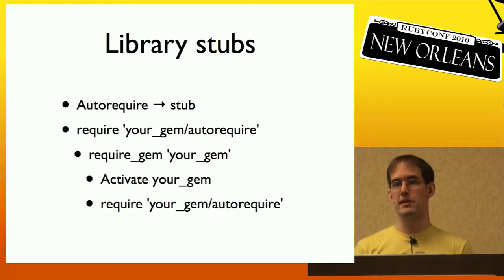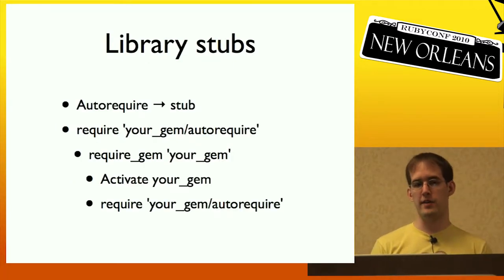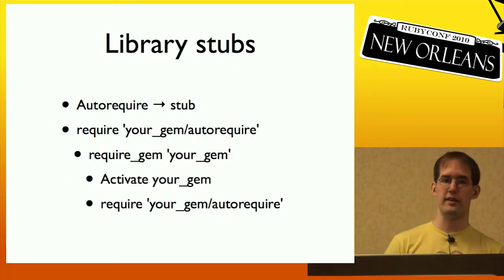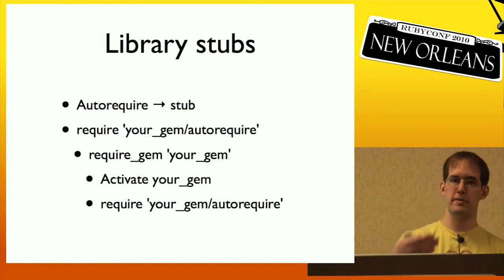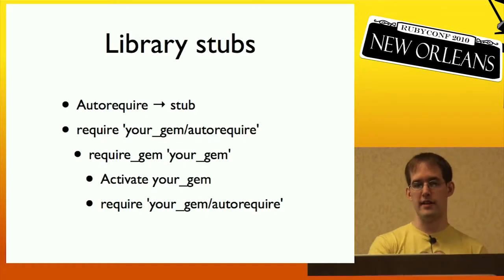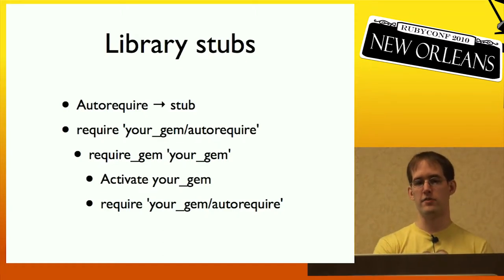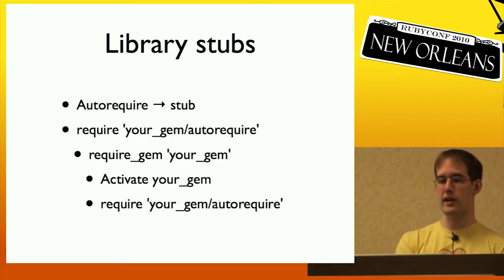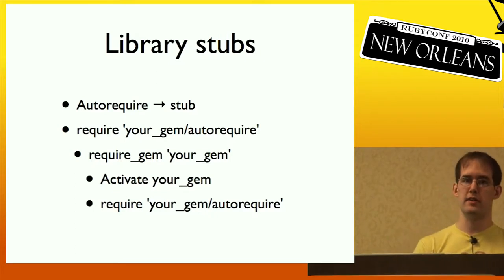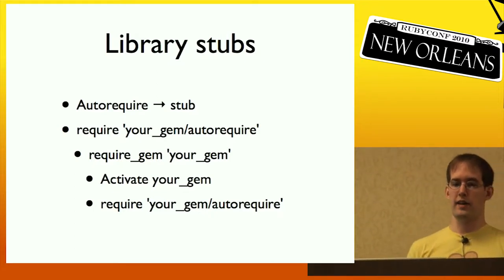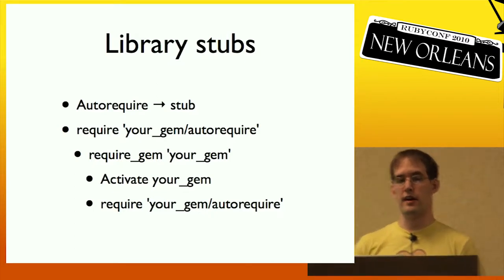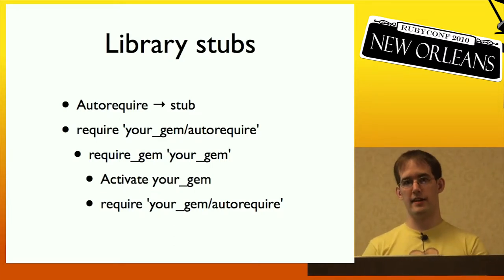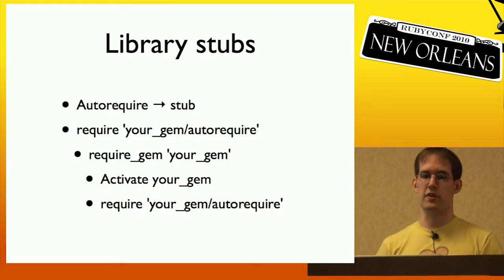So library stubs were added. With the library stub, if you had an auto-require in your gem, RubyGems would install a stub for this auto-require, which would — when you required it — do a require_gem first, then activate your gem, and then require the original file again now that it was added to your load path.